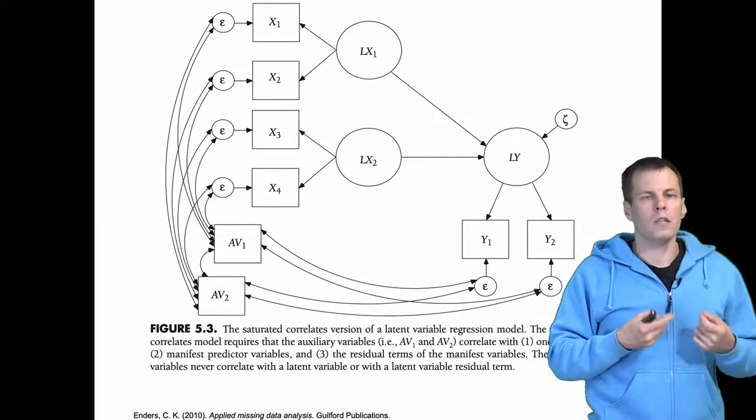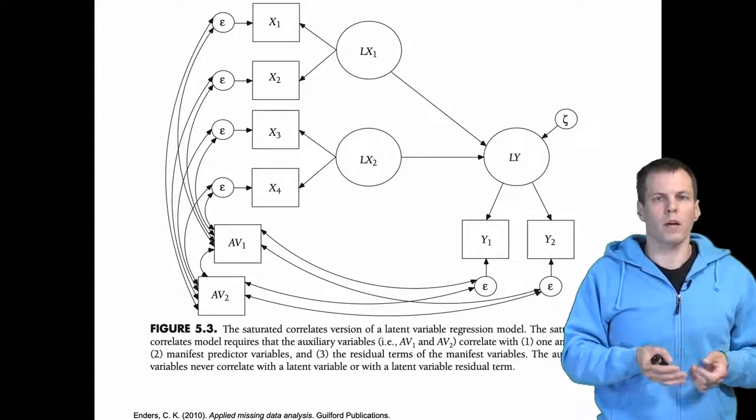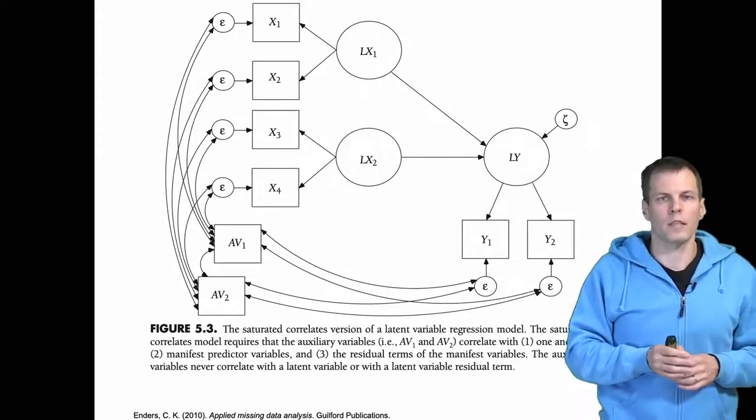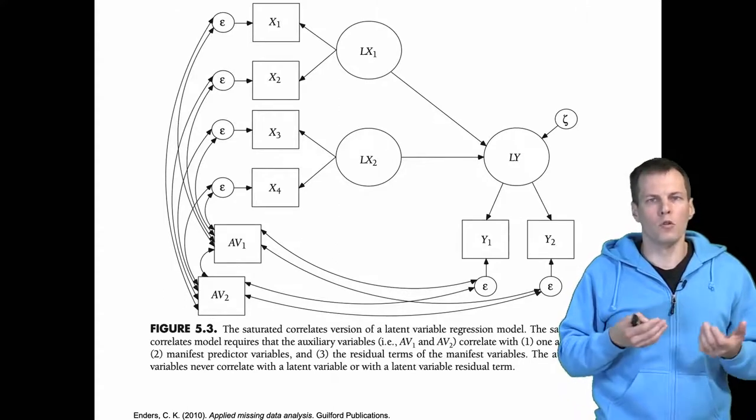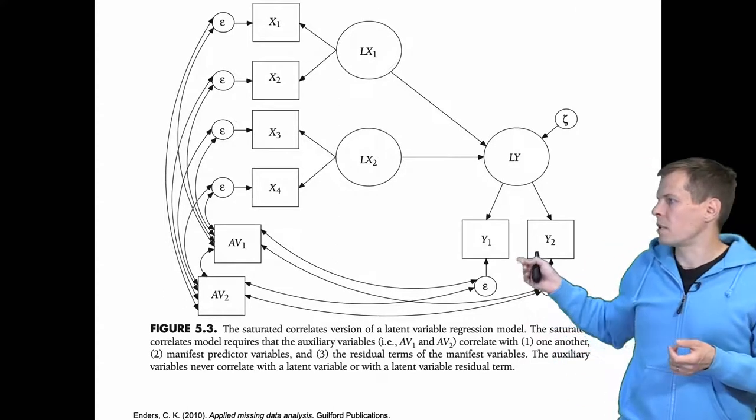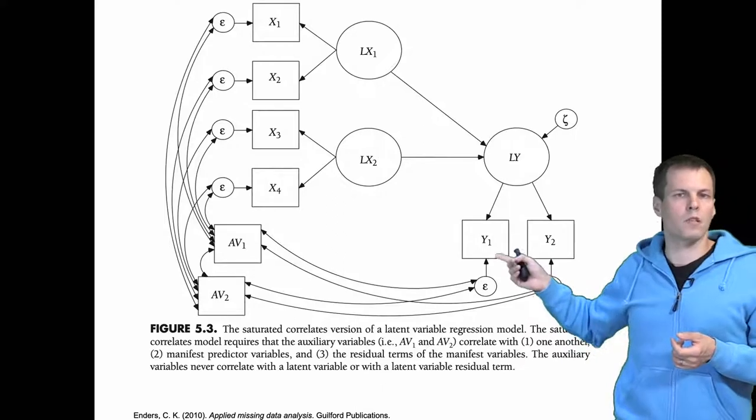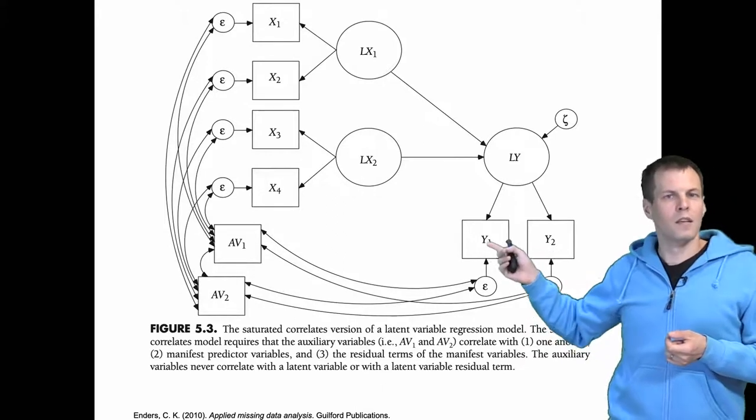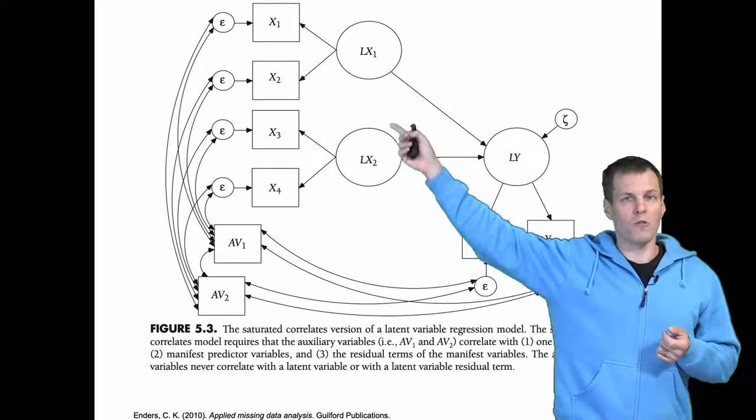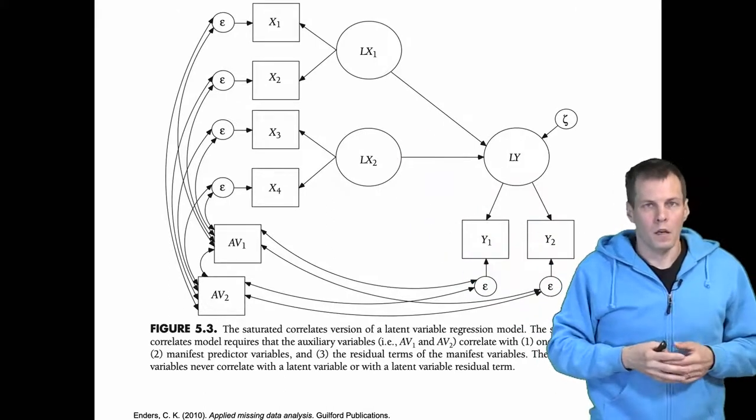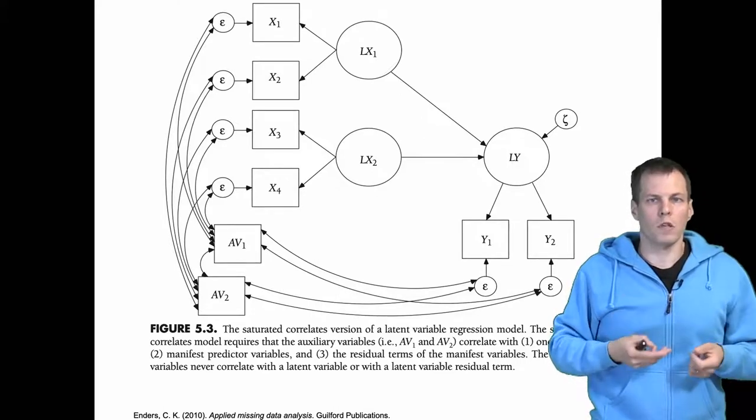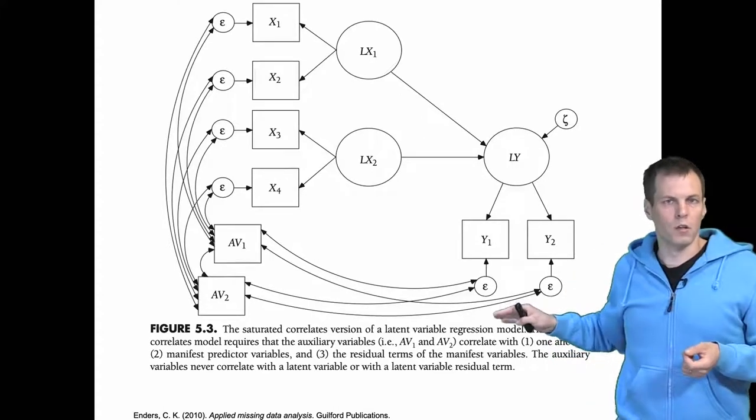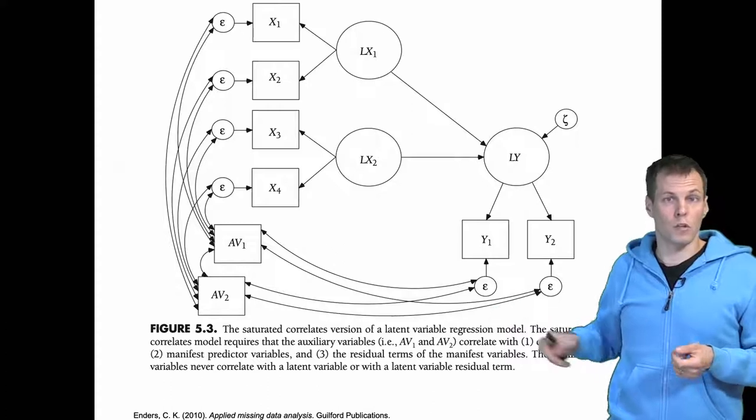Now this kind of specification is not directly supported by every statistical software. For example, I'm not sure if you can do this with Stata, but what you can do always is to just specify additional latent variables that predict these observed values. So they are basically kind of like error terms that you specify yourself. So there are workarounds if your statistical software does not allow you to do this kind of specification.